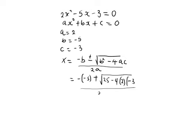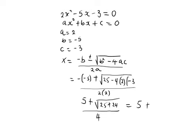This is divided by 2 times 2, which is 4. Negative and negative gives positive, so we have 5 plus the square root of 25. Negative 4 times negative 3 gives positive 12, times 2 gives 24, so plus 24. This equals 5 plus the square root of 25 plus 24, which is 49, then divided by 4.